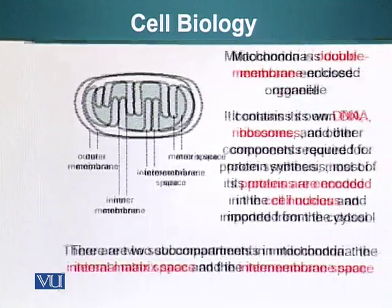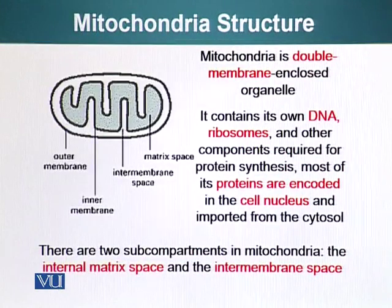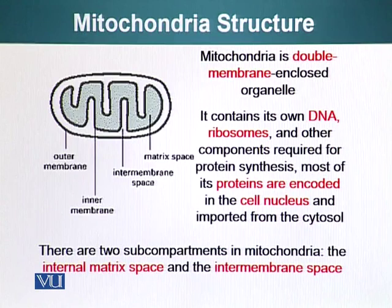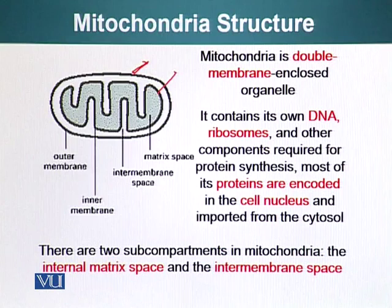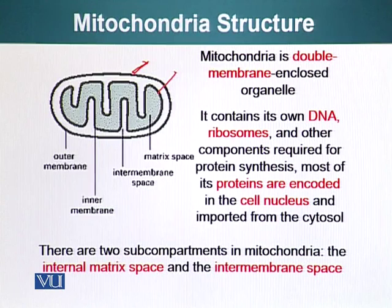Let's talk about mitochondrial protein transport. Mitochondria is a double-membrane-enclosed organelle with an outer membrane and an inner membrane. The outer membrane is relatively more permeable, allowing small ions to enter, while the inner membrane is more stringent. Mitochondria contain their own DNA, ribosomes, and other components required for protein synthesis. However, most of the proteins are encoded by the nucleus in the cell and imported from the cytoplasm.